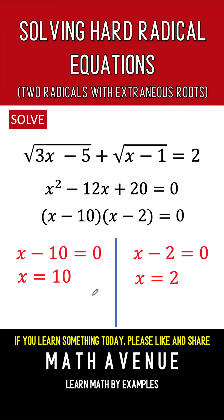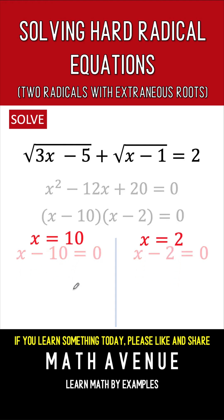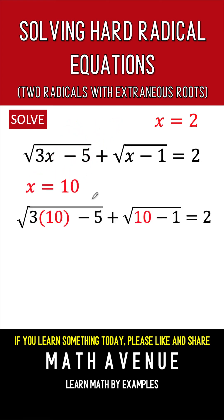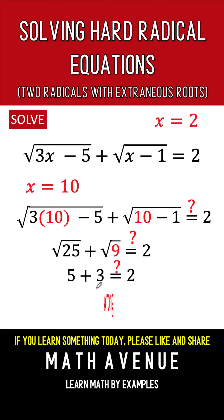Now we need to check for extra roots by substituting back into the original equation. Let's check x equals 10 first. Substituting 10 for x: 3 times 10 is 30, minus 5 is 25 — so we have the square root of 25. Then 10 minus 1 is 9 — so we have the square root of 9. The square root of 25 is 5, the square root of 9 is 3, and 5 plus 3 is 8, which is not equal to 2. So x equals 10 is an extra root and is not our answer.